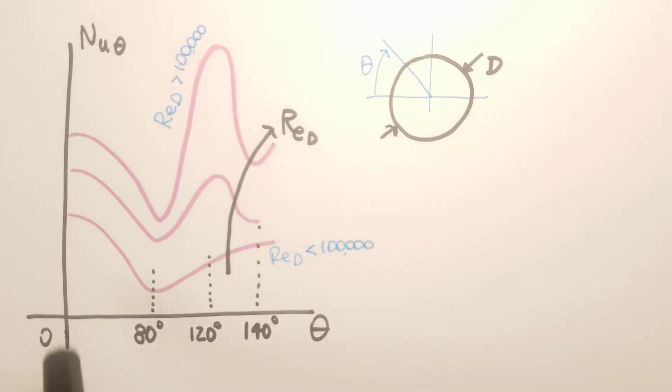So a typical behavior at low Reynolds number is a decrease and an increase, whereas we observe that at higher Reynolds numbers there is a double minimum. So let's see in detail what happens and let's start with the case of low Reynolds number.